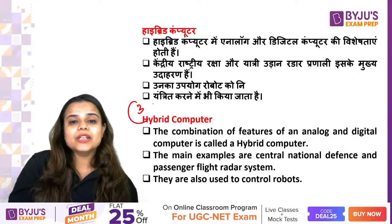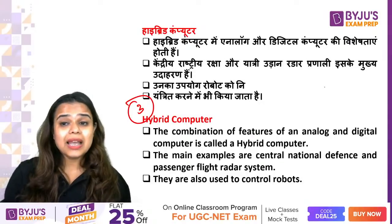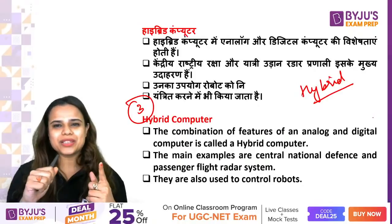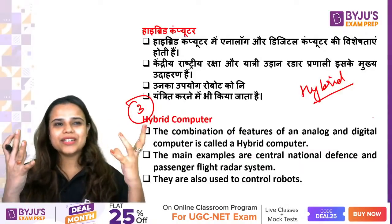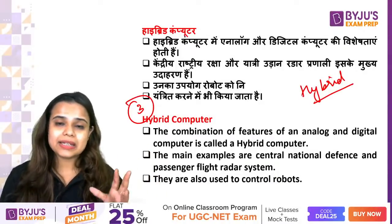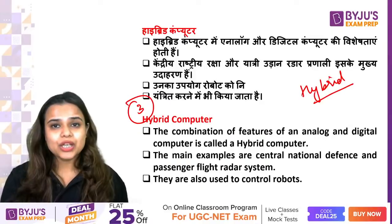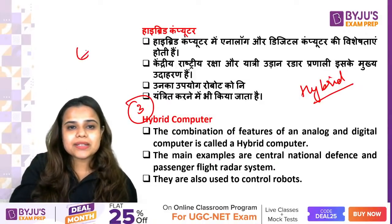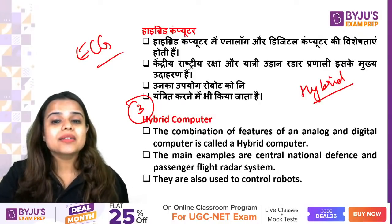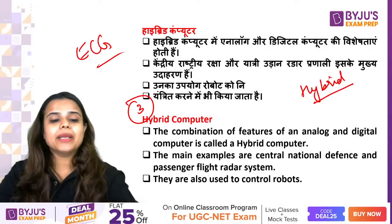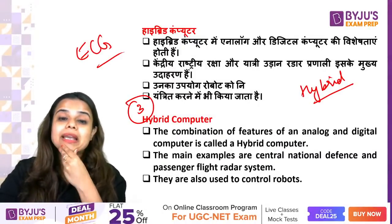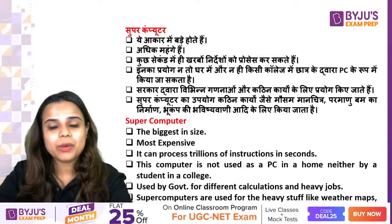The third variety is the hybrid computer. Hybrid means mixed - like hybrid seeds or vegetables. Hybrid computers are those that have both analog as well as digital capabilities. The best examples are an ECG machine, radar systems in flights, and robotics. There are many instances where we use both, so we call it hybrid.